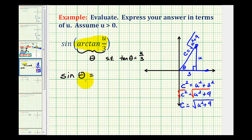So now sine theta is going to be equal to the length of the opposite side, or u, divided by the length of the hypotenuse, which is the square root of u squared plus nine.